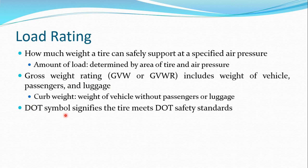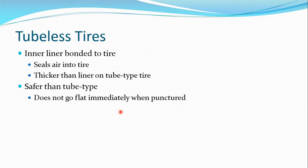The DOT symbol on a tire signifies that the tire meets DOT safety standards. DOT stands for Department of Transportation. They specify standards that must be followed while designing the tire — including cross-section, size, and load rating. Each and every specification must be approved per DOT standards.